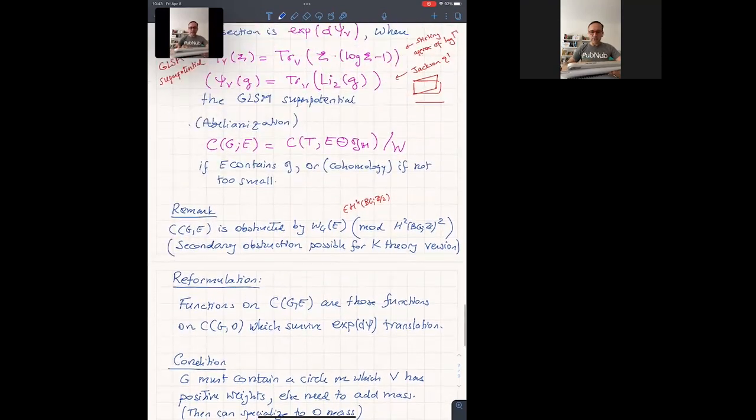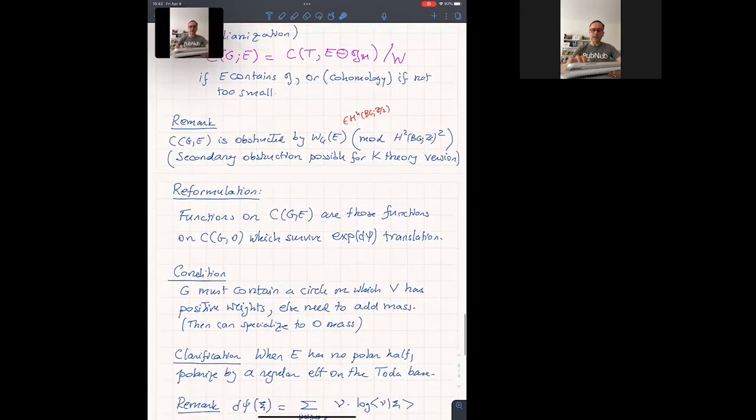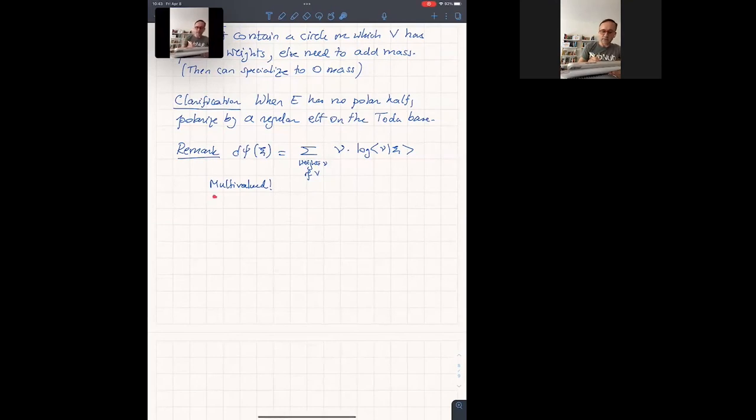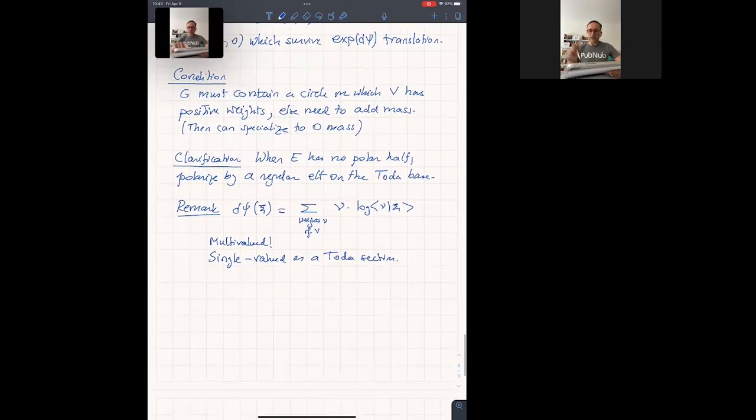So actually, this super potential that the physicists were telling us about for the gauge linear sigma model doesn't make sense. This derivative is multi-valued. Well, that's why the Toda system comes to the rescue, because you're exponentiating it. And when you're exponentiating it, of course, the ambiguities disappear. So it's single-valued as a section of the Toda system. If you ask what happens in E instead of V, so you don't have this thing, then, well, you choose the positive weight. So choose a vector somewhere in the dominant chain, a regular vector, a regular element psi, and choose the positive weights for that, and write the formula just for those weights.